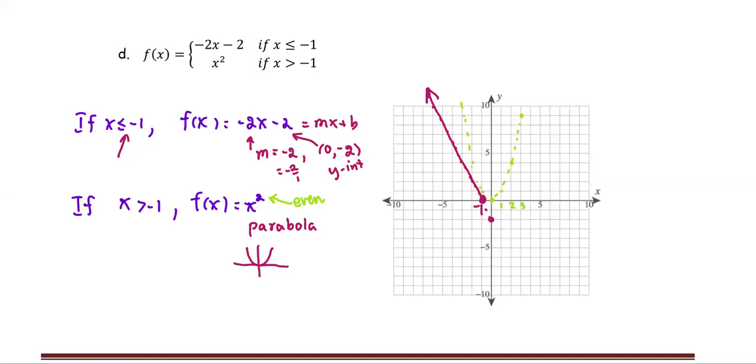The joining point is x equals negative 1. If x equals negative 1, the function at negative 1 is going to be negative 1 to the power 2, or 1. But since we do strictly greater than, we're going to do the empty circle at 1 and then still use the rest of the parabola graph.